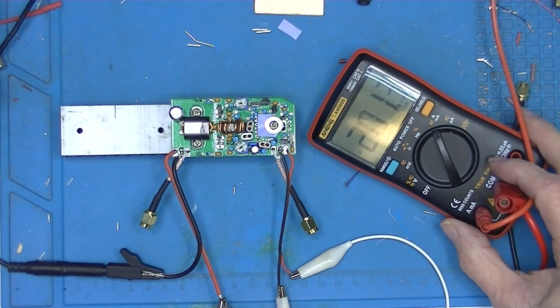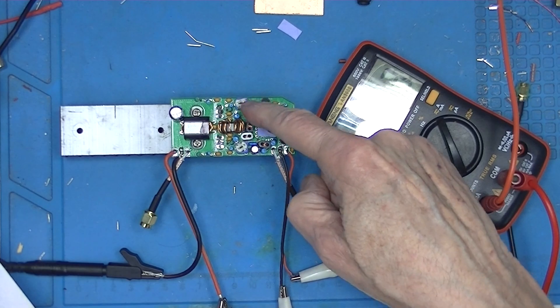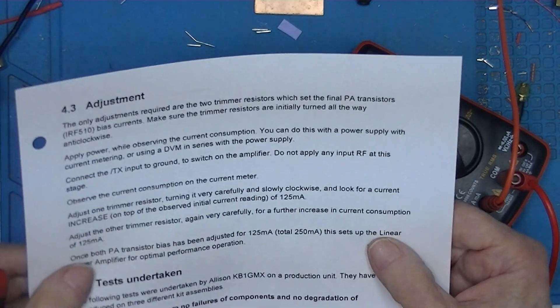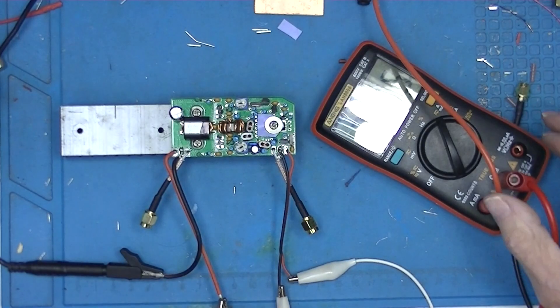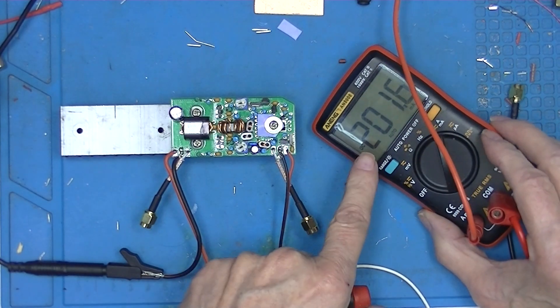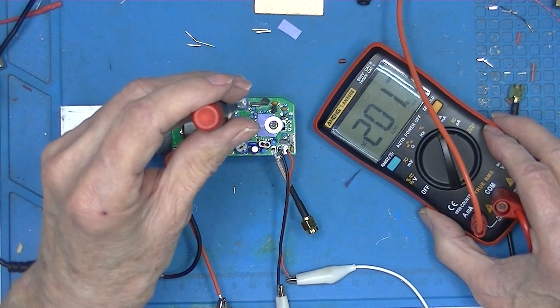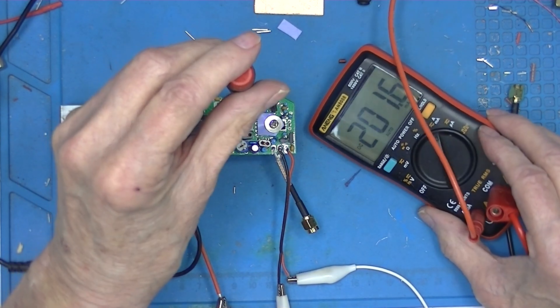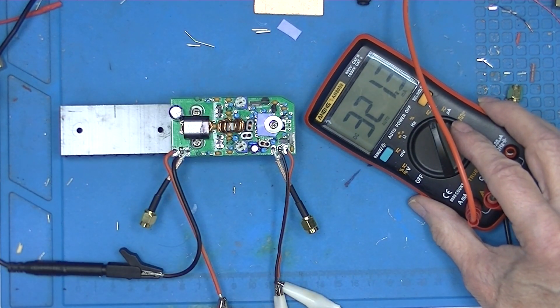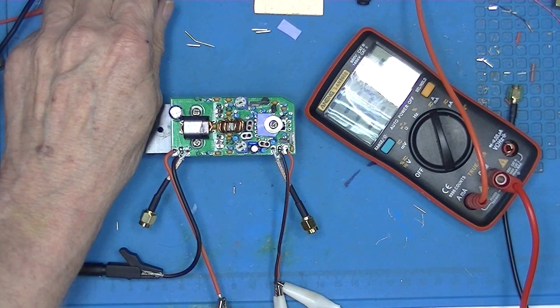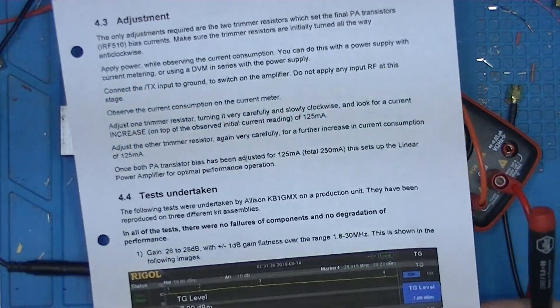Now I should increase the other side, that would be this one up here, until I get 125 additional milliamps. So this would be 325 milliamps. And I'm going to call that good enough, because it's so sensitive. And according to the instructions, that should be it.